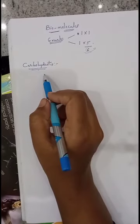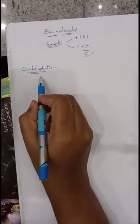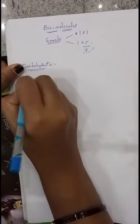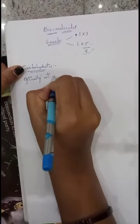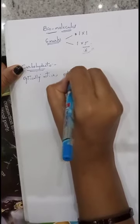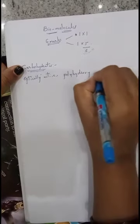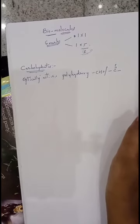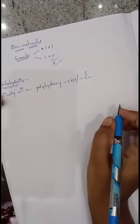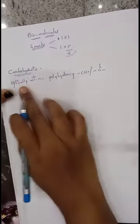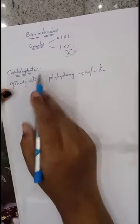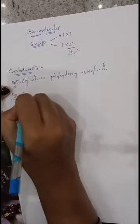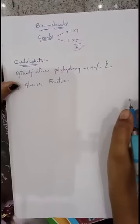First we want to know what are carbohydrates. These carbohydrates are optically active polyhydroxy aldehydes or ketones, and those compounds which can yield such type of compounds on hydrolysis are called carbohydrates. Examples: glucose, fructose, galactose, and so on. All these are said to be carbohydrates.